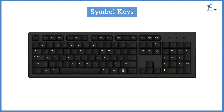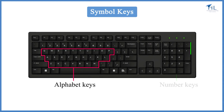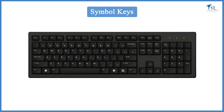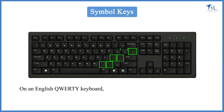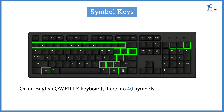We have already learned about the two main types of keys on the keyboard — alphabet keys and number keys. We also learned about some symbol keys like backslash, comma, colon, double quotes, single quote, lesser than, and greater than. On an English QWERTY keyboard, there are 40 symbols arranged on 28 keys.